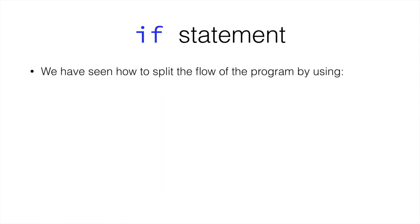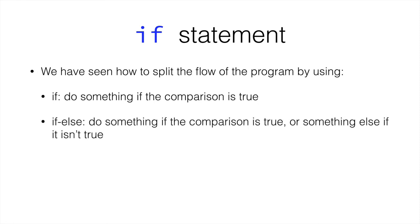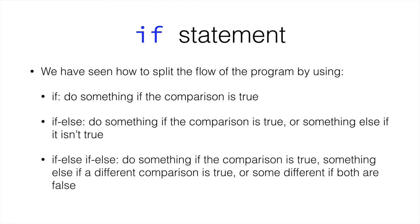So, we have seen how to split the flow of the program: using if to do something when a comparison is true; if/else to do something if the comparison is true or something else if it isn't; and if/else-if/else to do something when one comparison is true, something different when another comparison is true, or something else when both are false. Hopefully this wasn't too confusing. I suggest you watch the following video, where we will go into the programming environment and try to program some if statements and see where they lead us, and hopefully clear out any doubts you might have. I'll see you in the next video.